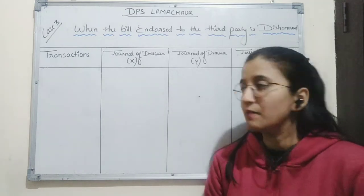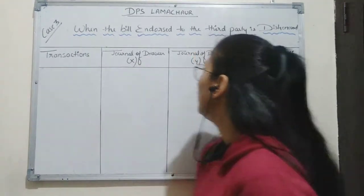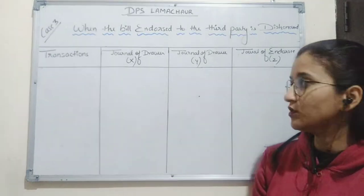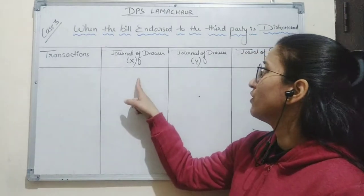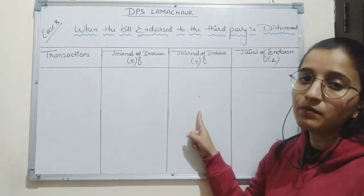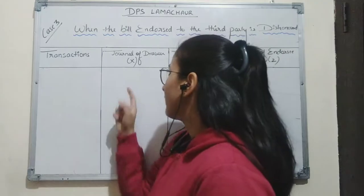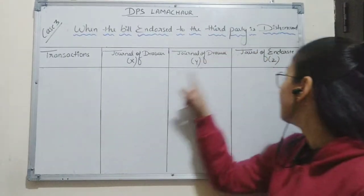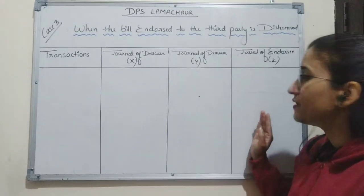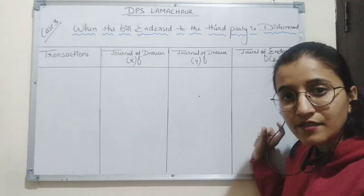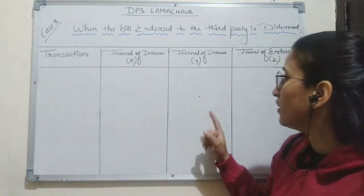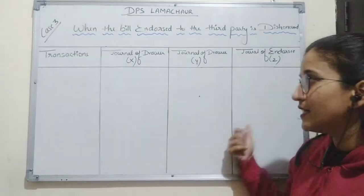Let's understand this with an example. Suppose X is the drawer, Y is the drawee, and Z is the endorsee. Here X has drawn a bill in the name of Y. Y accepted the bill and returned it to X. X then transferred this bill to the third party, Z. Z is the payee, which means Z is the person who will collect the amount of the bill from Y. So here Y will be liable to pay the amount of the bill to Z.